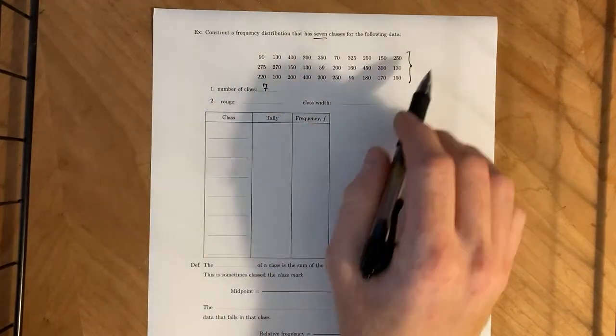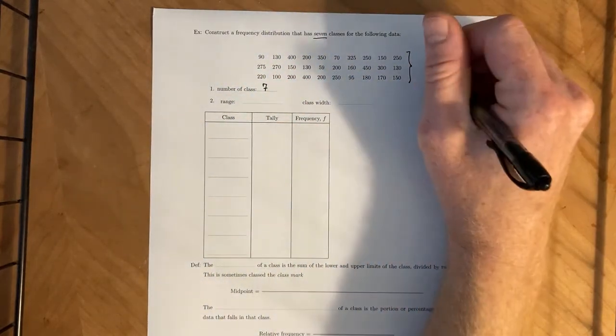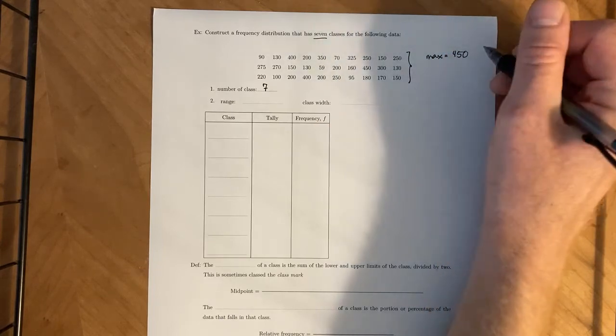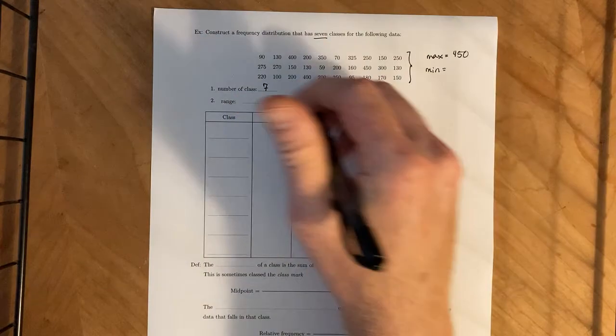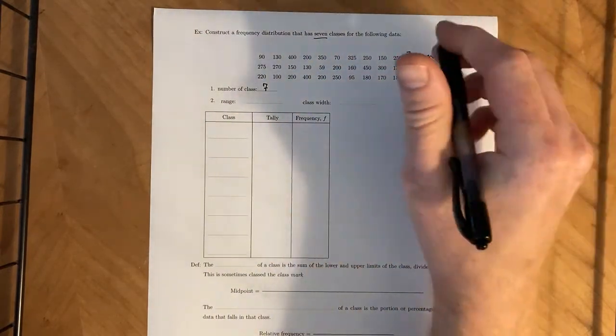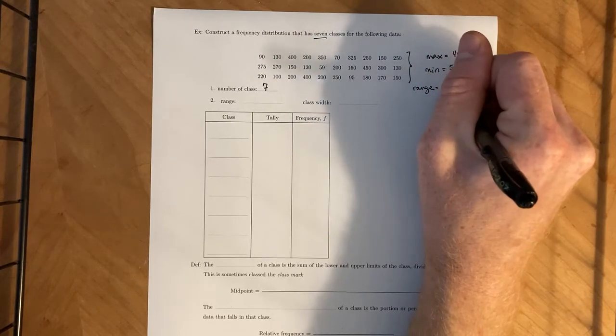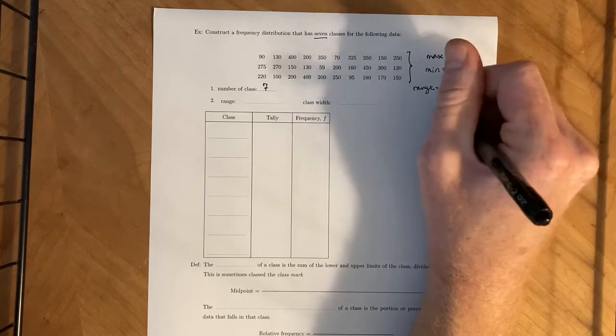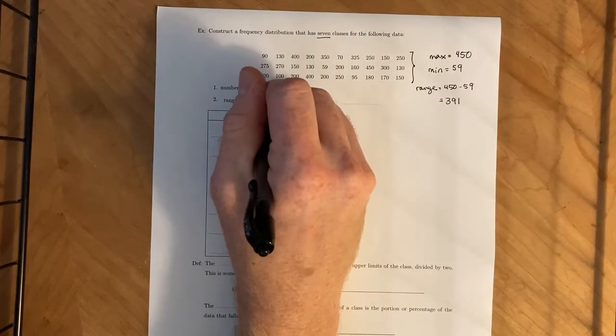Now, if you go through and find the maximum value, that is 450. If we find the minimum value going through here, that's going to be 59. So our range is 450 minus 59, which gives us a total of 391. So our range is 391.